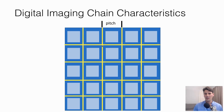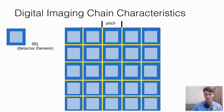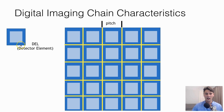Digital x-ray images are taken with x-ray elements, often called detector elements or dells. This detector element is sometimes used interchangeably with pixel — but pixel also refers to the element on the display. To be clear, the detector element is called a dell. The pitch is the distance from one dell to the neighboring dell.